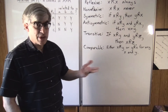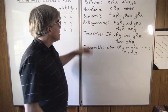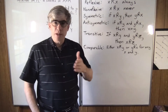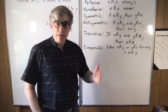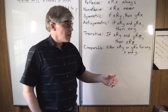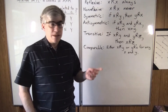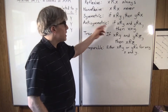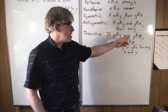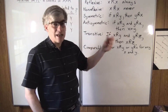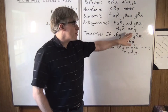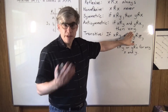Non-reflexive means x is never related to itself. We don't have a word for sometimes. Symmetric means if x is related to y, then y is related to x. Antisymmetric: if x is related to y and y is related to x, then x equals y.